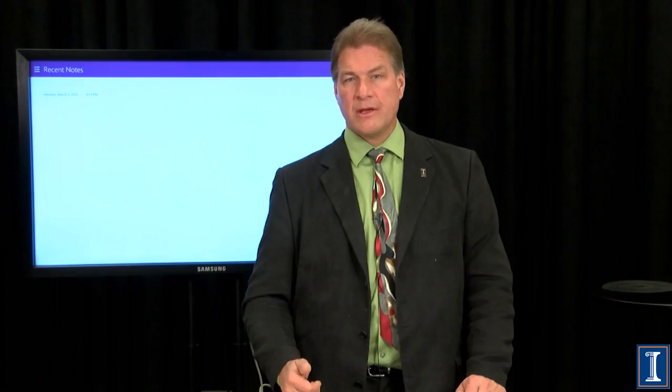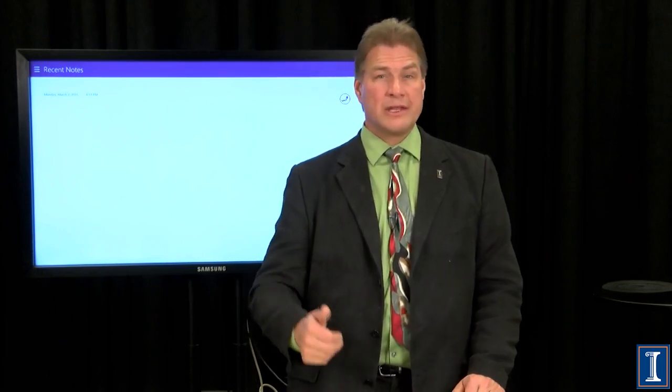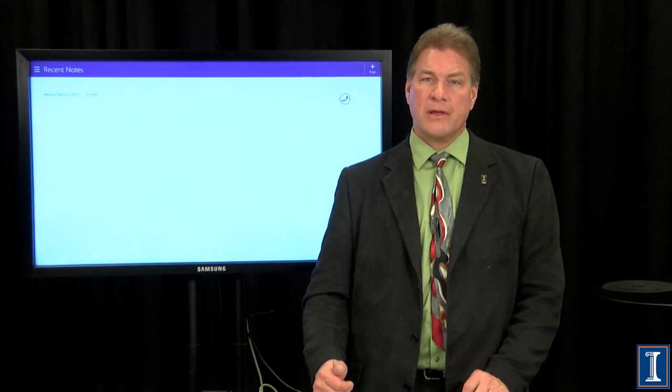Modern technology, smart economic regulation and policy, and understanding the science of what's going on has enabled the acid rain problem to be largely eliminated, at least in the United States. That's what you need to know about dropping acid.